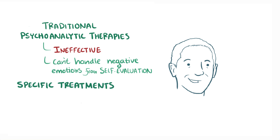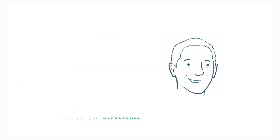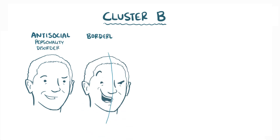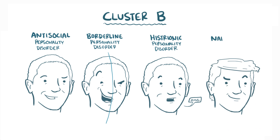Some specific treatments can work well, though. For example, dialectical behavioral therapy, which targets specific thoughts and behaviors, can be pretty helpful for individuals with Borderline Personality Disorder. As a quick recap, cluster B personality disorders include Antisocial Personality Disorder, Borderline Personality Disorder, Histrionic Personality Disorder, and Narcissistic Personality Disorder.